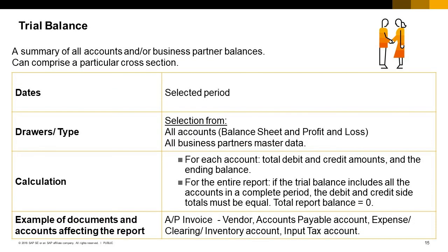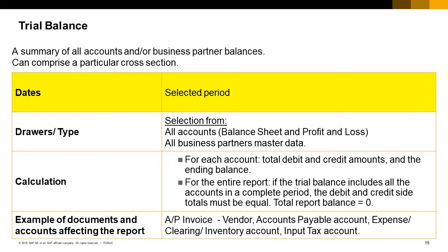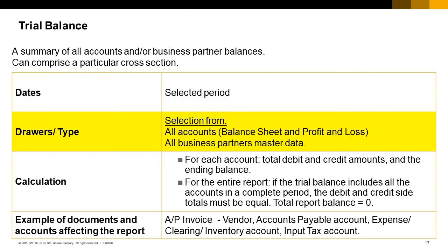The trial balance displays a summary of all accounts and/or business partner balances. The report can comprise a particular cross-section of accounts and business partners. You can issue the report for a selected posting period or periods. The trial balance presents all selected accounts — balance sheet and profit and loss — and business partners' master data. If you include business partners in the report, those will be shown at the end, after the list of accounts. The total balance for customers and vendors is represented through the control accounts balances.